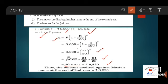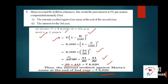Thus, the amount credited against Maria's name at the end of the 2nd year is Rs. 8,820. This completes subdivision 1.